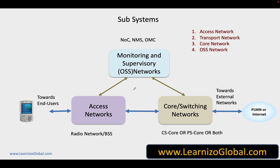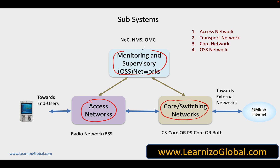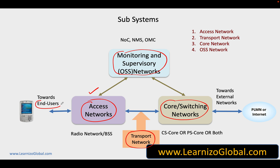Let's look at this picture. In this picture we have the access network, the core and switching network, as well as some monitoring and supervisory networks. In addition to this, we have another block which is referred to as the transport network.